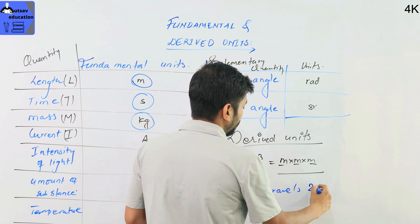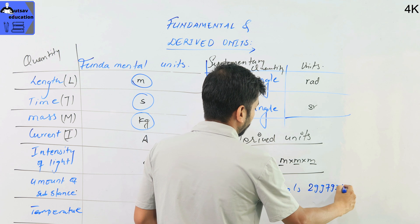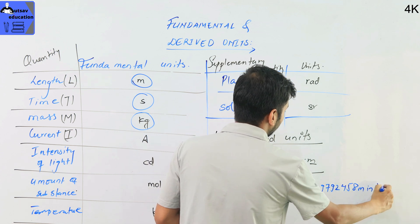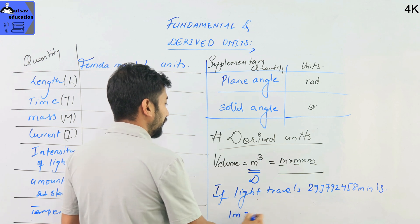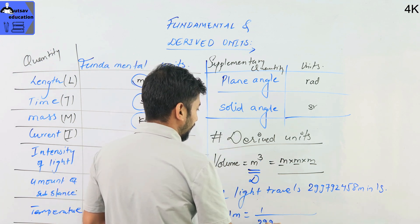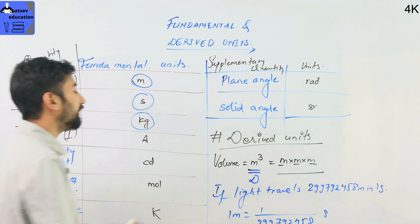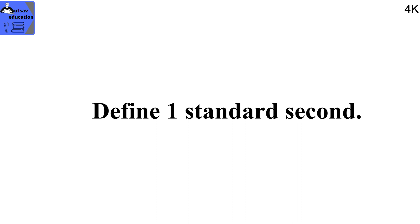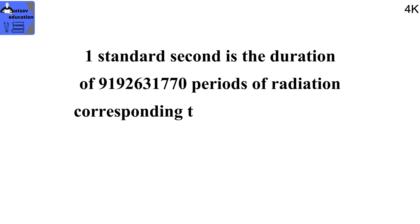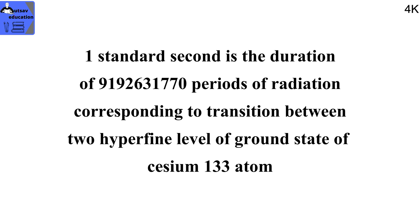The meter is defined as the length of path traveled by light in vacuum during the time interval of 1 by 299,792,458 seconds. So if light travels 299,792,458 meters in 1 second, then 1 meter is 1 by 299,792,458 seconds. For 1 second: one second is the duration of 9,192,631,770 periods of radiation corresponding to the transition between 2 hyperfine levels of the ground state of cesium-133 atom.